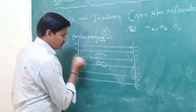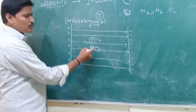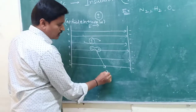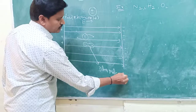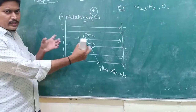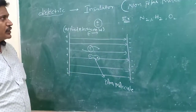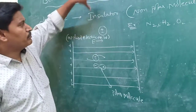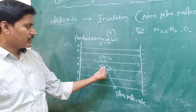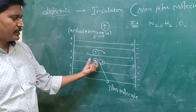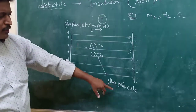Due to polarization, the molecule now has a minus and plus separation, so it behaves like a polar molecule. When insulating material is kept in a uniform electric field, positive and negative charges become separated — this phenomenon is called electric polarization, and due to that, the material behaves like a polar molecule.